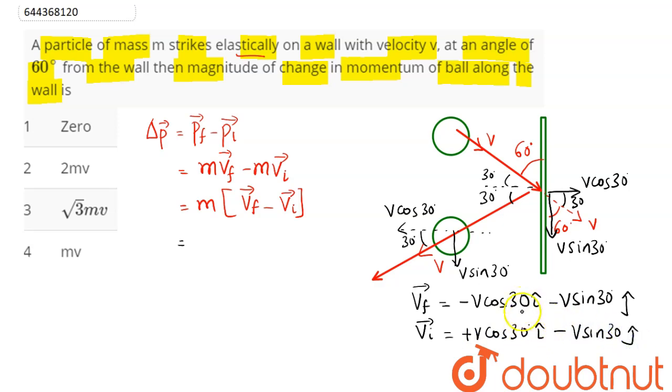So VF vector minus VI vector here comes as M into minus 2V into cos 30 I cap since J cap component difference becomes zero. So this is minus 2MV cos 30, here is root 3 by 2 into I cap.